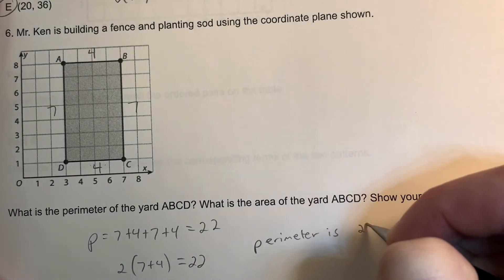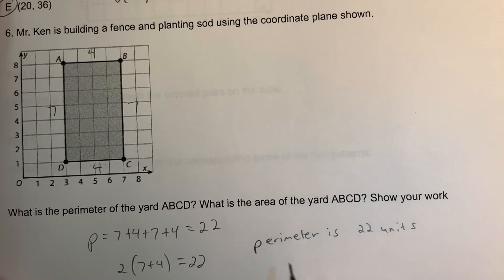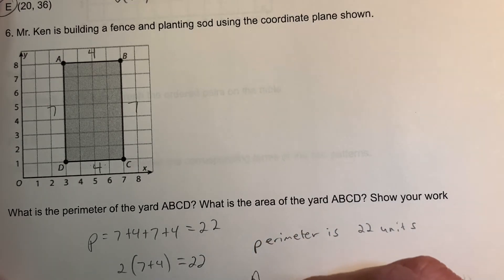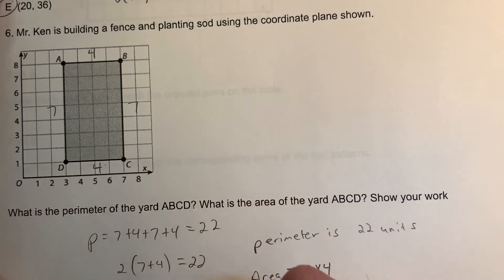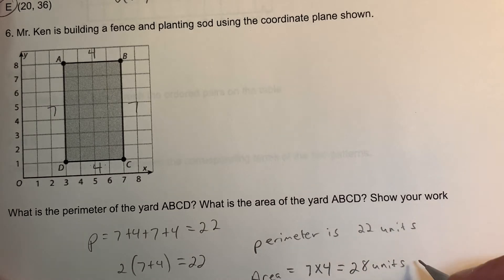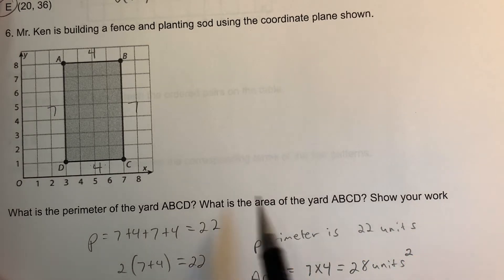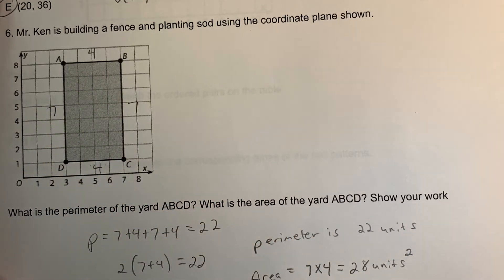The perimeter is twenty-two units. I also need to find the area — that's just length times width, and that would be units squared. If you count up all the boxes you get twenty-eight units squared.